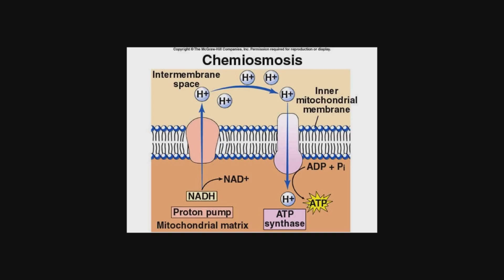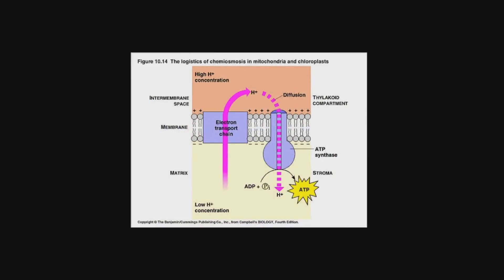So now we're going to take a look at chemiosmosis in chloroplasts. With the splitting of water, or photolysis, with photosystem II, we get protons to accumulate in the lumen of a thylakoid — the lumen is just the inner part. And the electrons from the electron transport chain drive protons from the stroma to go inside of the lumen of the thylakoid. And so again, like we saw in the mitochondria, this establishes a proton gradient.